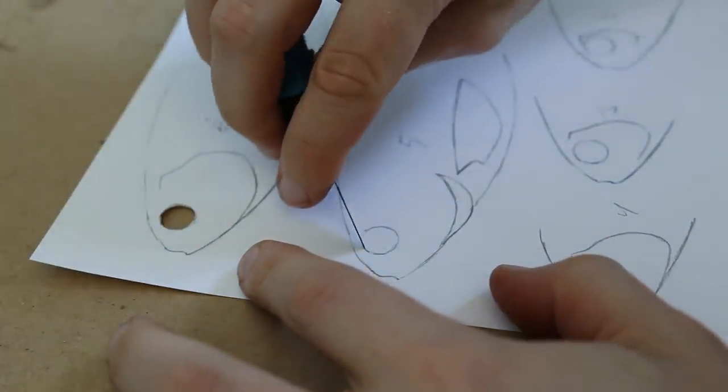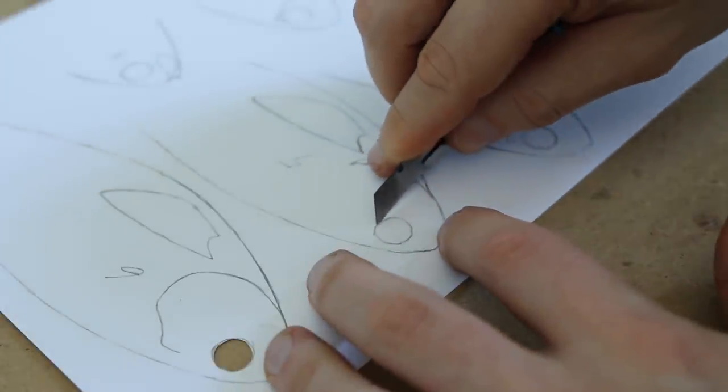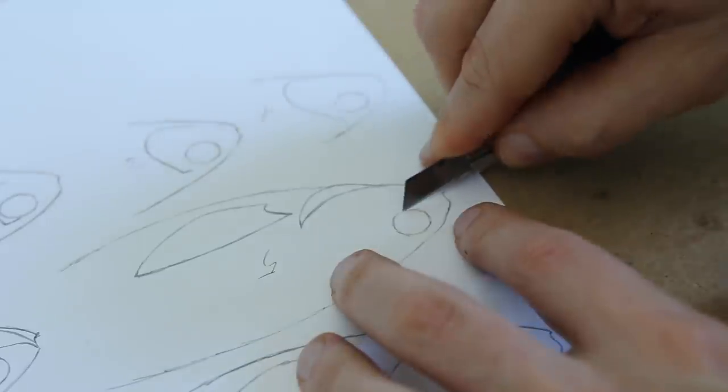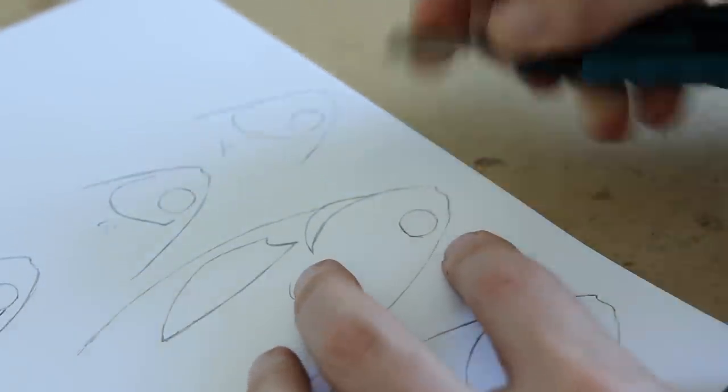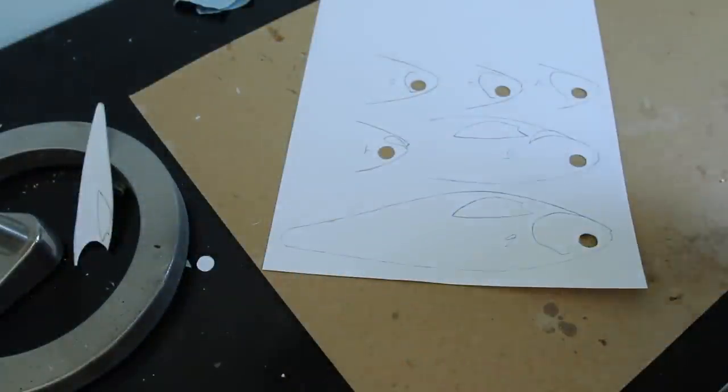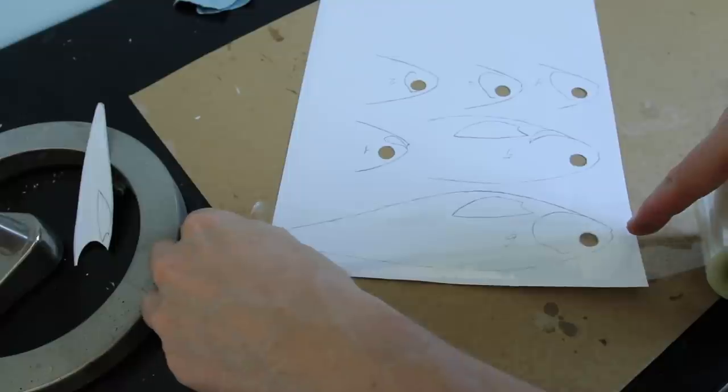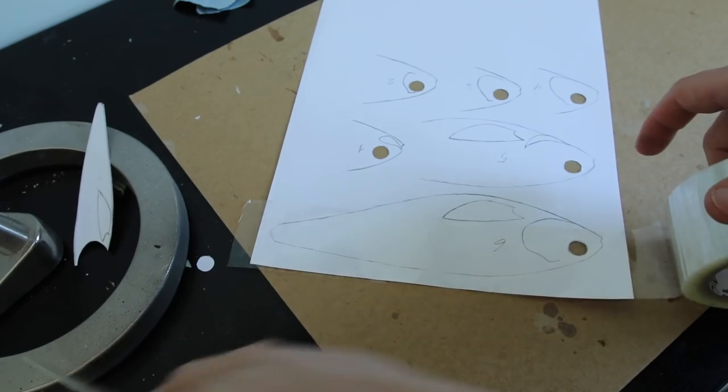I'm gonna start by cutting out the eye opening which will help me align the stencil a little bit better when I actually start painting the highlights and effects on my lure. Because I'm using water-based paint I want to make sure that these stencils actually last me for a bit, so I'm just covering them with packing tape to enhance the longevity of these things.